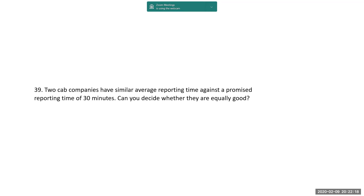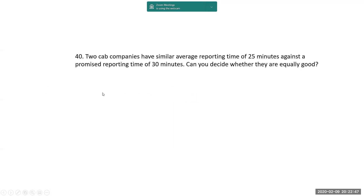Two cab companies have similar average reporting time against a promised reporting time of 30 minutes. Can you decide whether they are equally good? No, you can't decide — because it depends upon the variations. One may have an average reporting time of 30 minutes obtained from 0 minutes and 1 hour. Another may be from 25 minutes and 35 minutes. The one with the deviation of 25 to 35 minutes will be better. So standard deviation is very important.